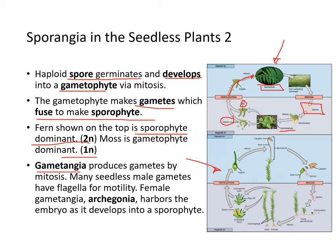Gametangia produces the gametes by mitosis. Here, a spore-producing young gametophyte becomes an adult gametophyte, which possesses the gametangia that will produce gametes by mitosis. These are the egg cells and sperm cells. In the female gametangia — archegonia — the embryo is harbored as it develops into a sporophyte.